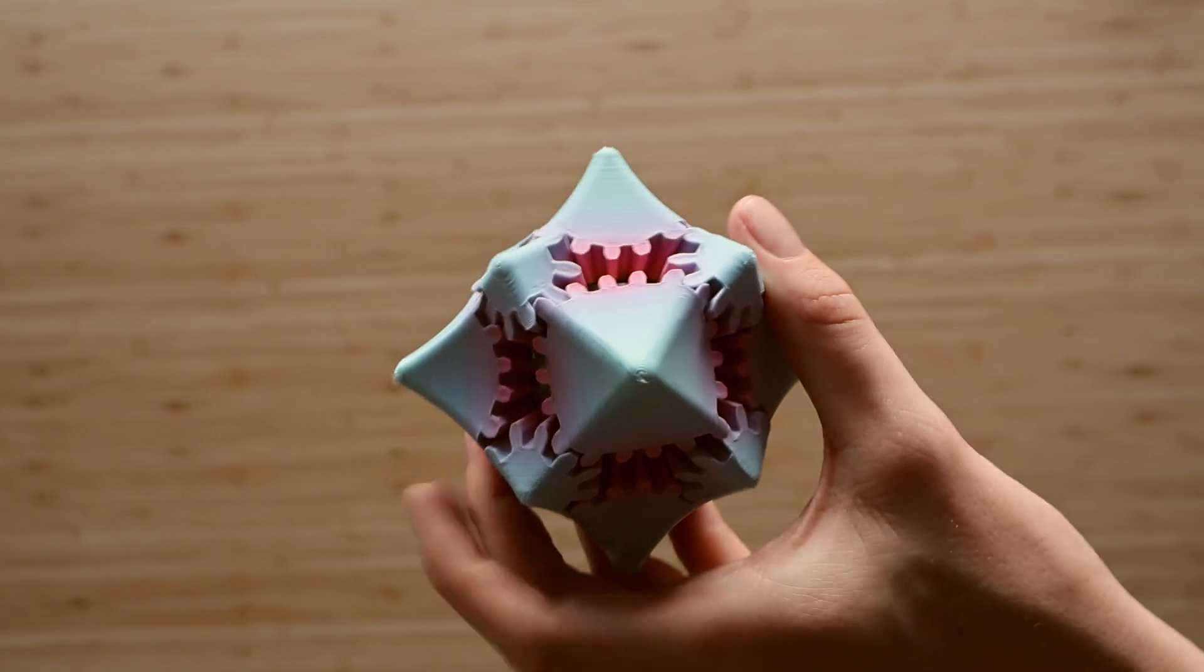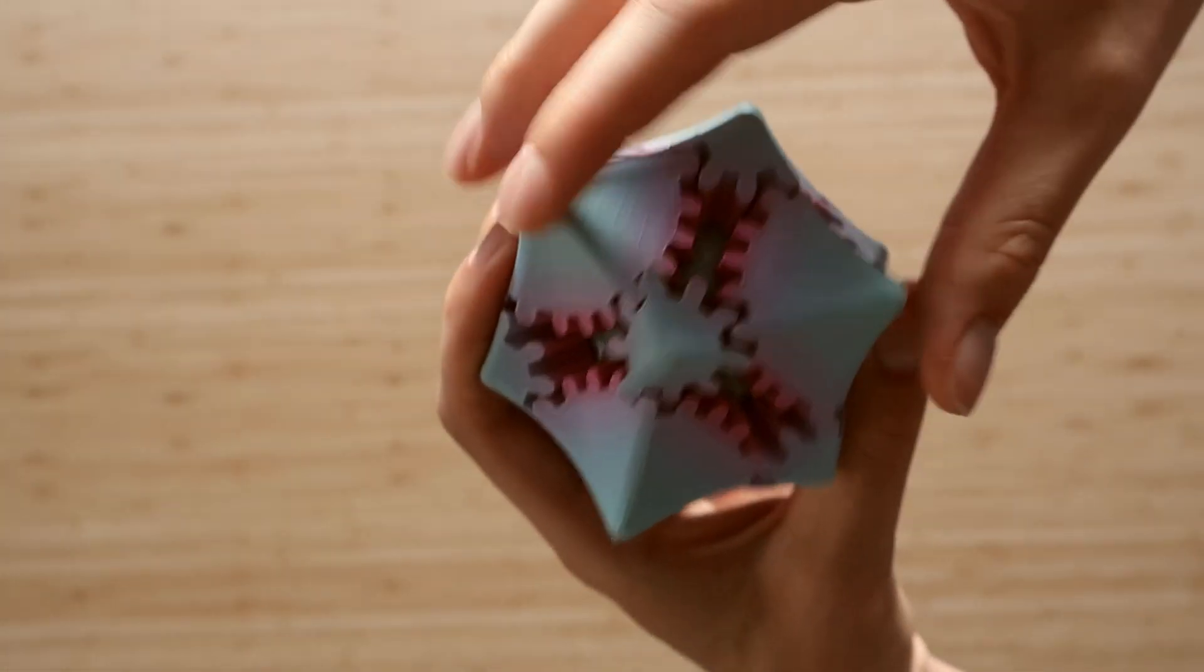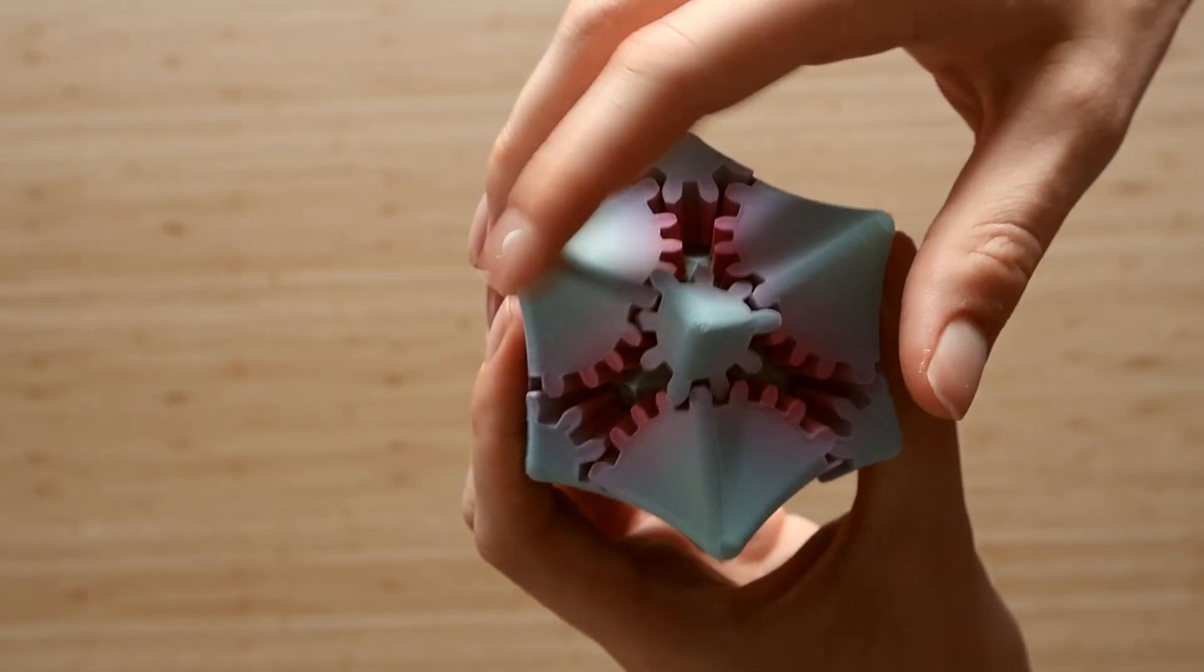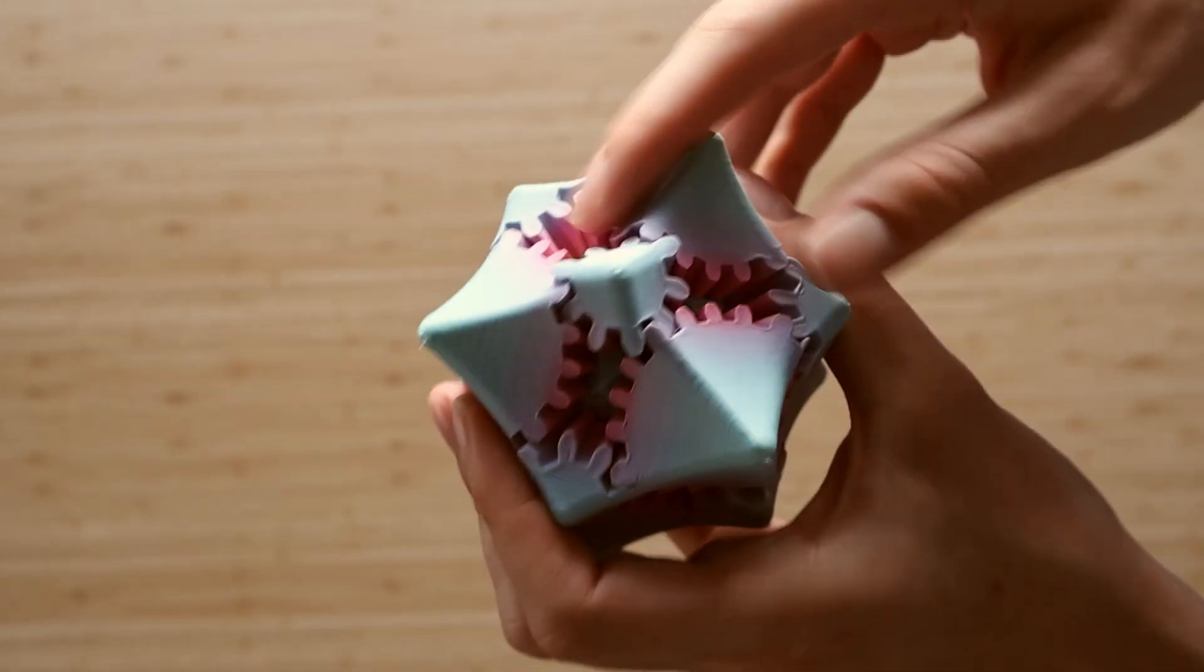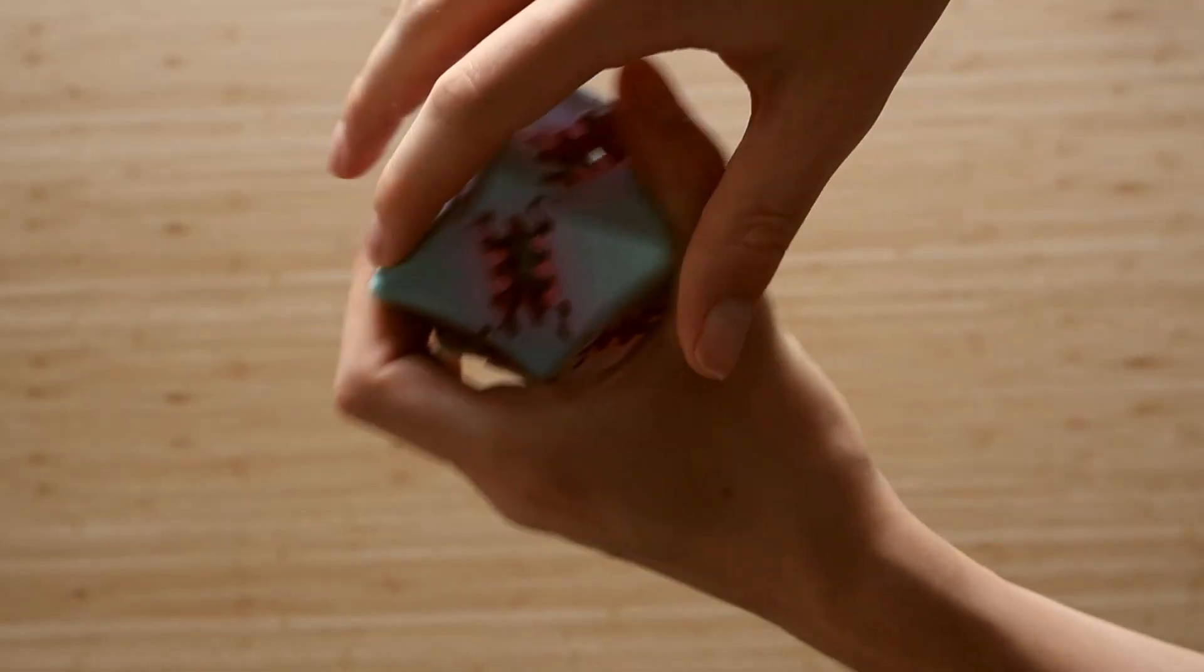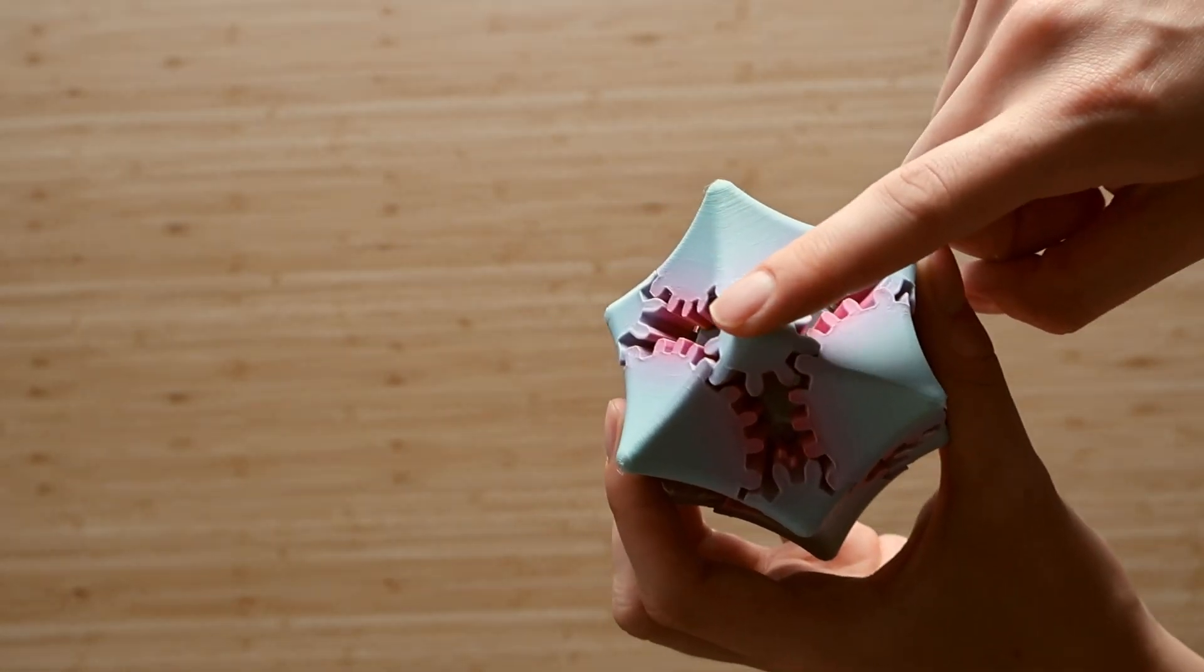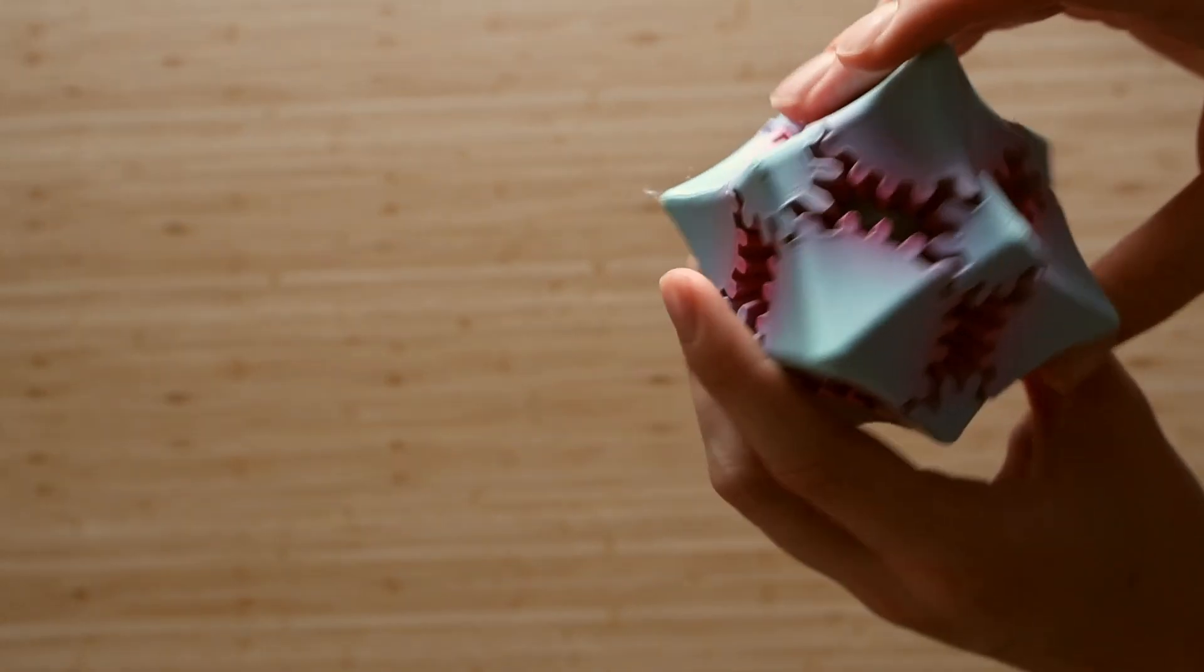Okay, so here is a common mistake you might end up with at the end. As you can see, this piece right here doesn't align with the edges. And even if I turn it a little bit, there is no way I can align it. That means that this piece was put in on the wrong side.